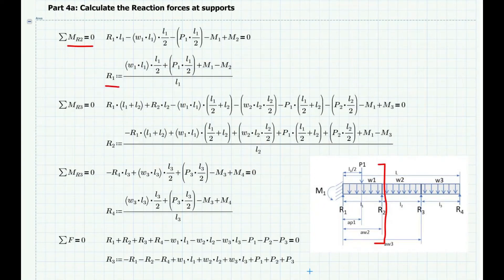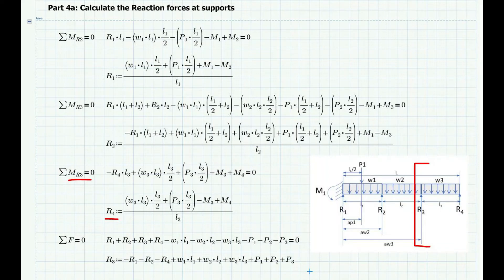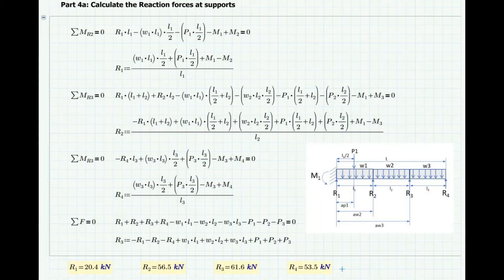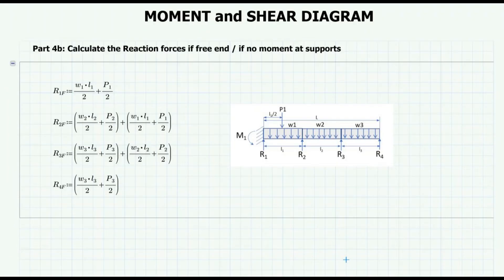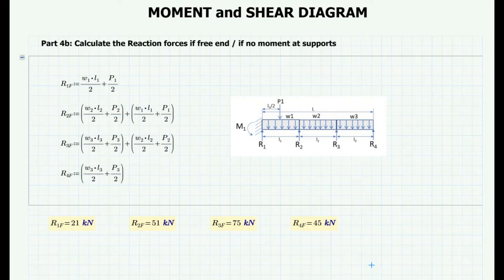Then I take another cut using the span from R1 to R2 to R3, and take moment about R3 to solve for R2. I take another moment at R3 on the other side, using the span from R3, to solve the value of R4. Finally, using the summation of all forces equation, the value of R3 is solved. These are the final values of the reaction forces due to the loads and the moments at supports. Then I calculate the reaction forces considering zero moment at supports, or a free end condition. It's basically dividing the loads in half. P2 and P3 are there just in case those loads are present. These are the final values of reaction forces for the free end condition.